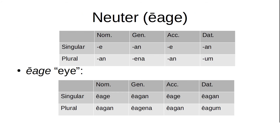The last one is, of course, the neuter — the Are declension. Again, notice this is very similar to the feminine. The only difference between it and the feminine is the accusative singular, which is also -e instead of -an. That's the only difference; all the other endings are the same. Singular: nominative -e, genitive -an, accusative -e, dative -an. Plural: nominative -an, genitive -ena, accusative -an, dative -um. In the plural, all three genders are exactly the same — it's only in the singular that they differ.